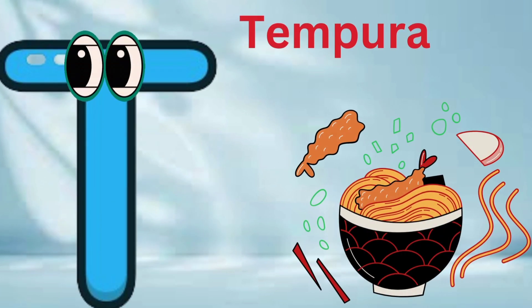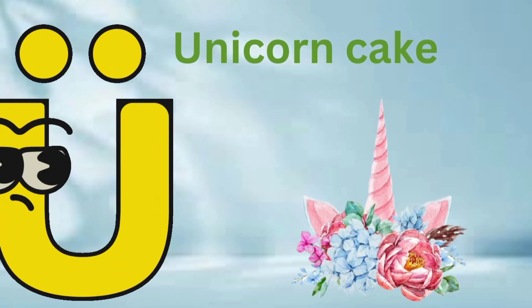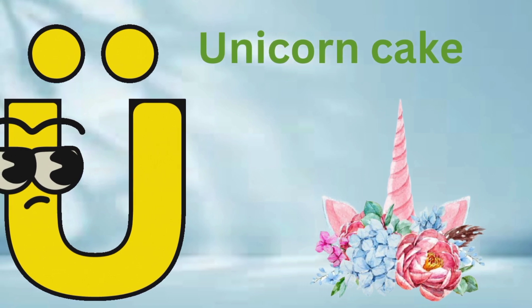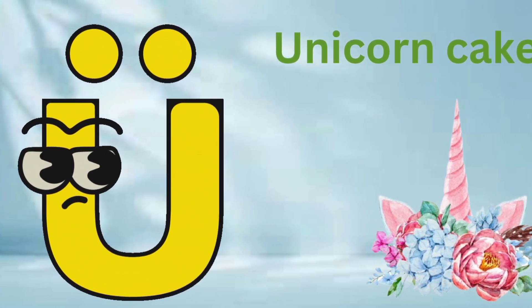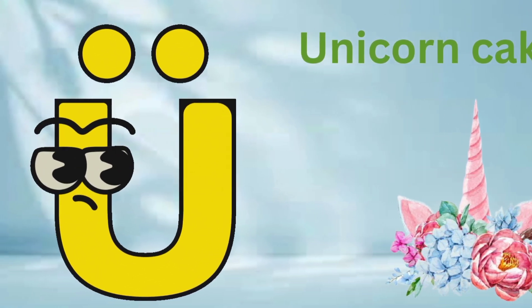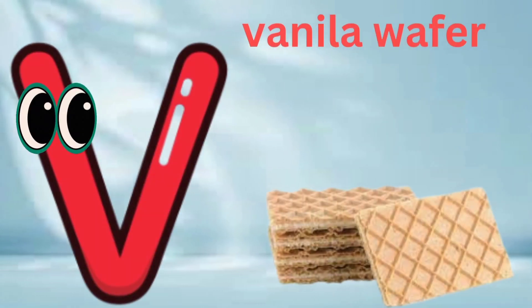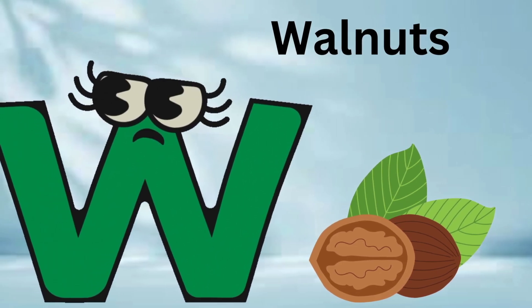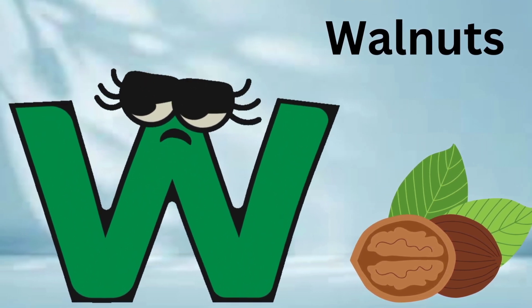T is for tempura. T, T, tempura. U is for unicorn cake. Y, Y, unicorn cake. V is for vanilla wafer. V, V, vanilla wafer.